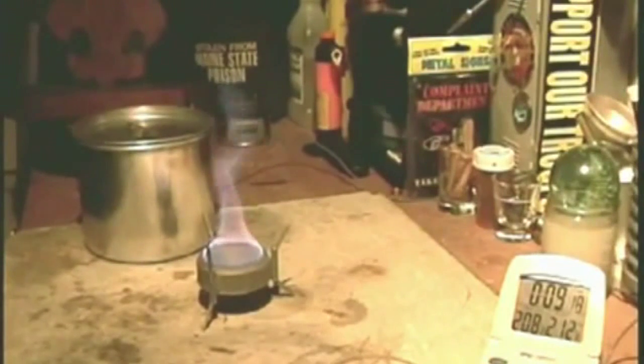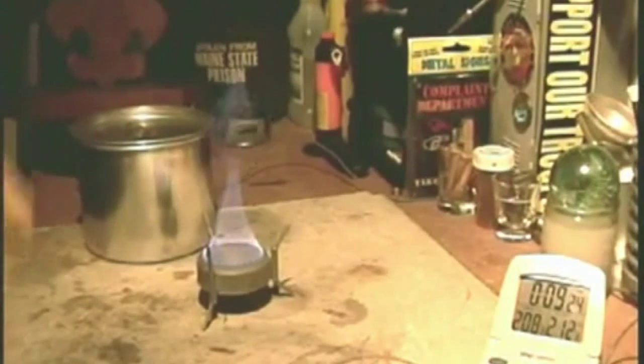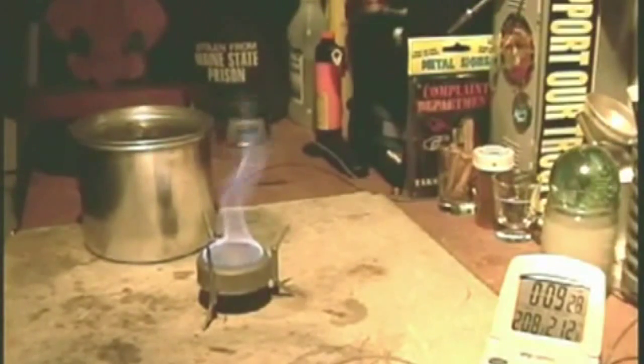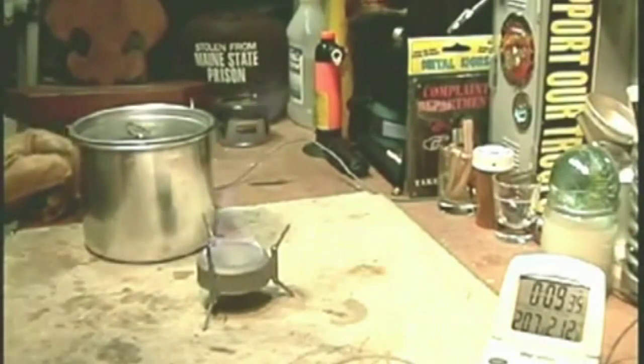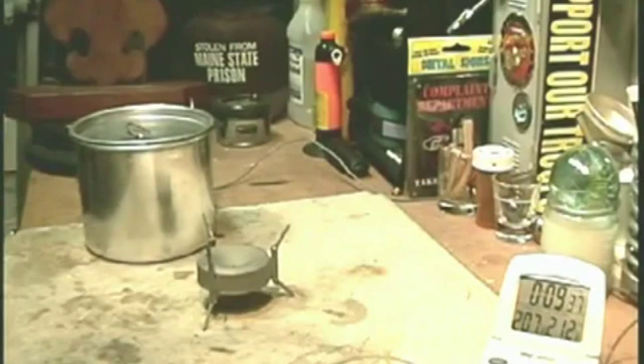I don't know if I said that in the beginning. This is supposed to be a Vargo Triad titanium stove. Came from Hong Kong. So for all I know, it could be a knockoff. I only paid $18 and $5.80 in shipping.